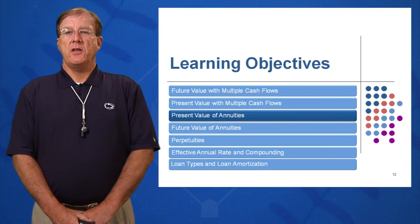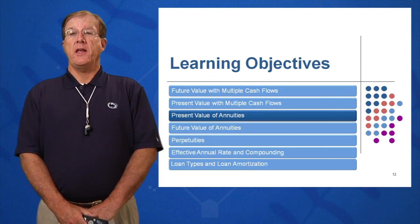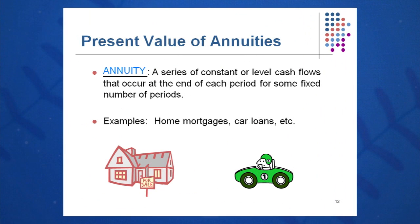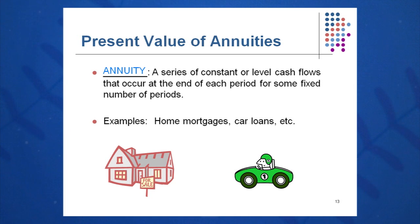The next topic of interest, learning objective number three, is present value of an annuity. What is an annuity? It's the same amount each period. So whether it be your rent — you pay the same amount each month — your car payment may be an annuity, you pay the same amount to the financing company each month. Your mortgage is generally an annuity; you pay the same amount to the bank on your mortgage loan for your house each month. Maybe the same thing with your credit card bill — you may make it an annuity by paying the same amount each month.